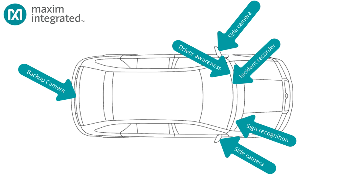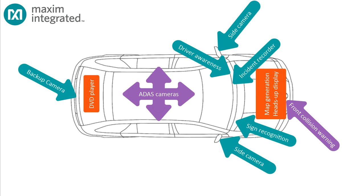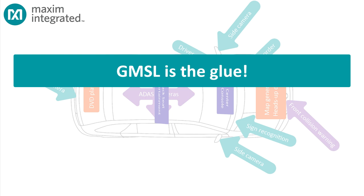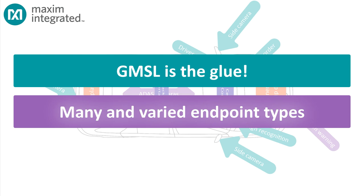In a typical automotive system, you'll have multiple video sources — cameras, sensors, backseat entertainment players — as well as computer sources that generate maps and other data, and multiple video sinks: the dashboard display, backseat displays. And many of these will interconnect over high-speed serial links like Maxim's GMSL devices.